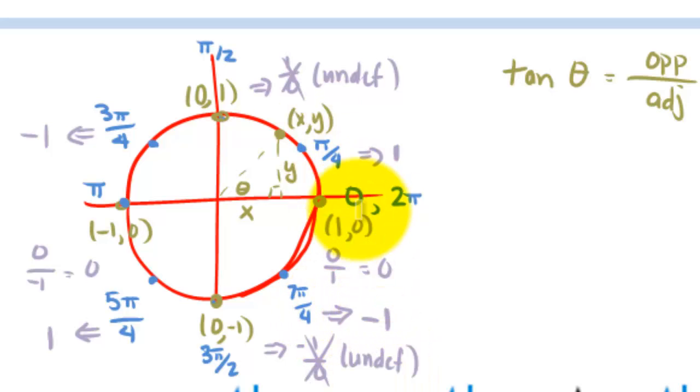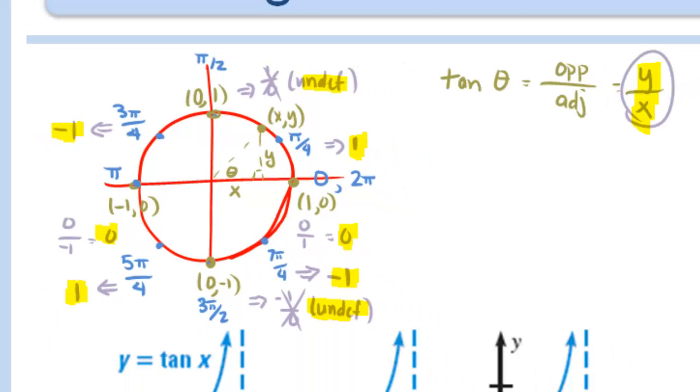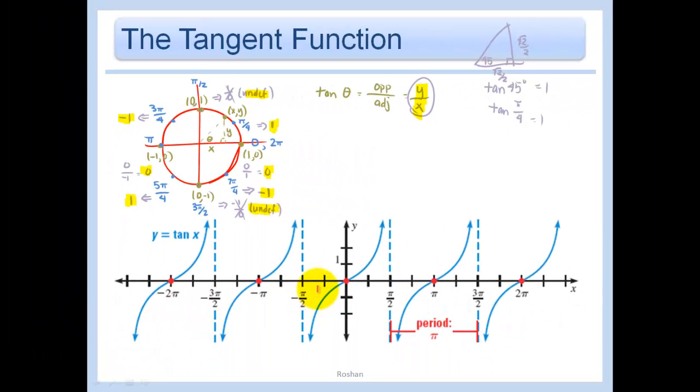So I'm going to go ahead and highlight the points that we're plotting. Remember, we're plotting the tangent, which is the y over x stuff. So that's that, that's that, then we have undefined, then we have negative 1, then we have 0, we have 1, then we have undefined again, and then we have negative 1. So let's go ahead and try and make some sense of this.